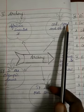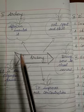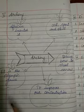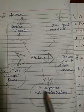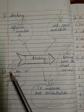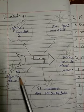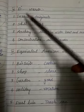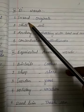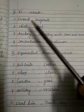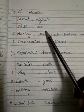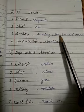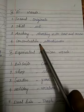Archery is a sport and skill. Using a bow to shoot an arrow, it improves our concentration. It is an Olympic game. Key words: invent, originate, skill, art, archery — shooting with bow and arrow — concentration.